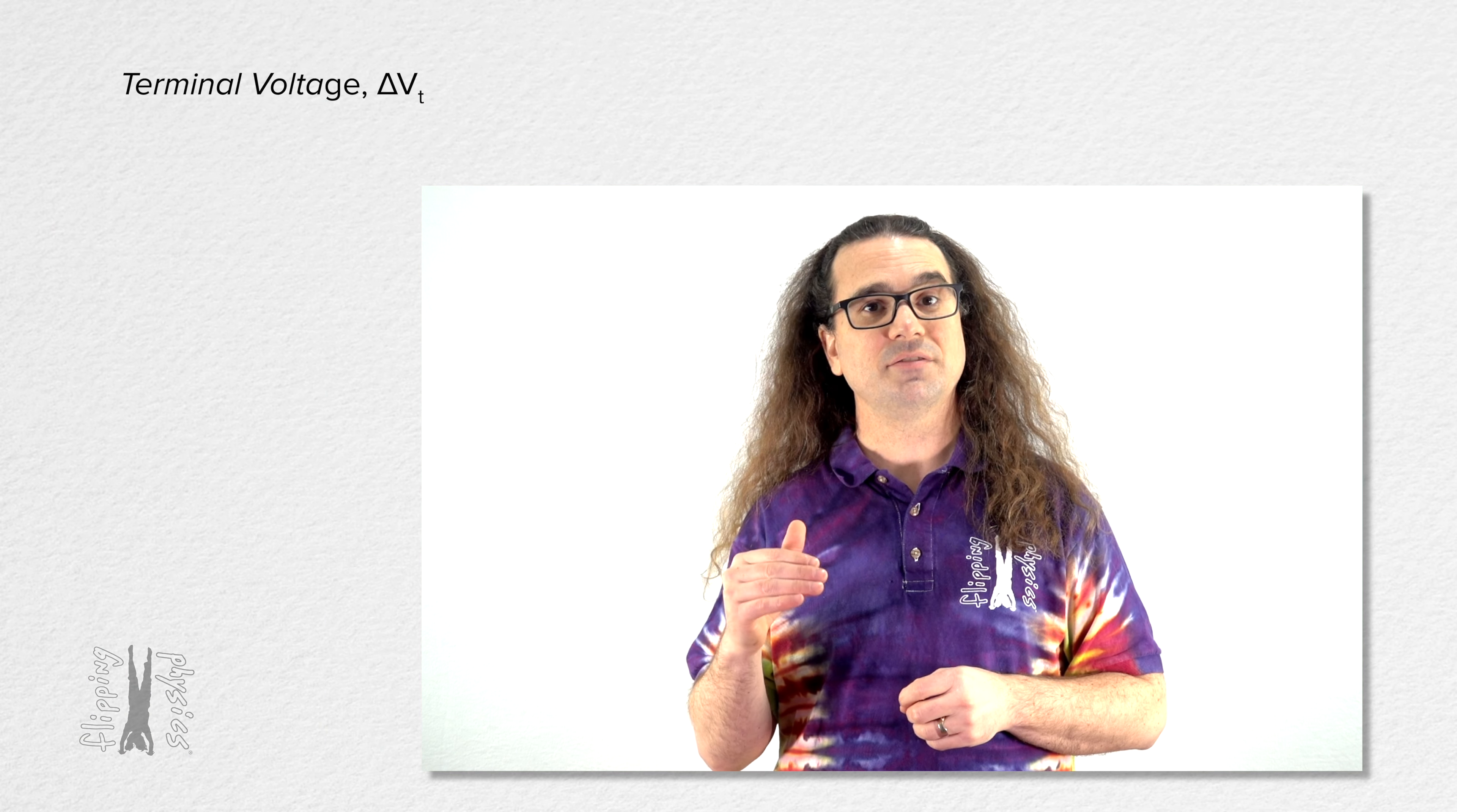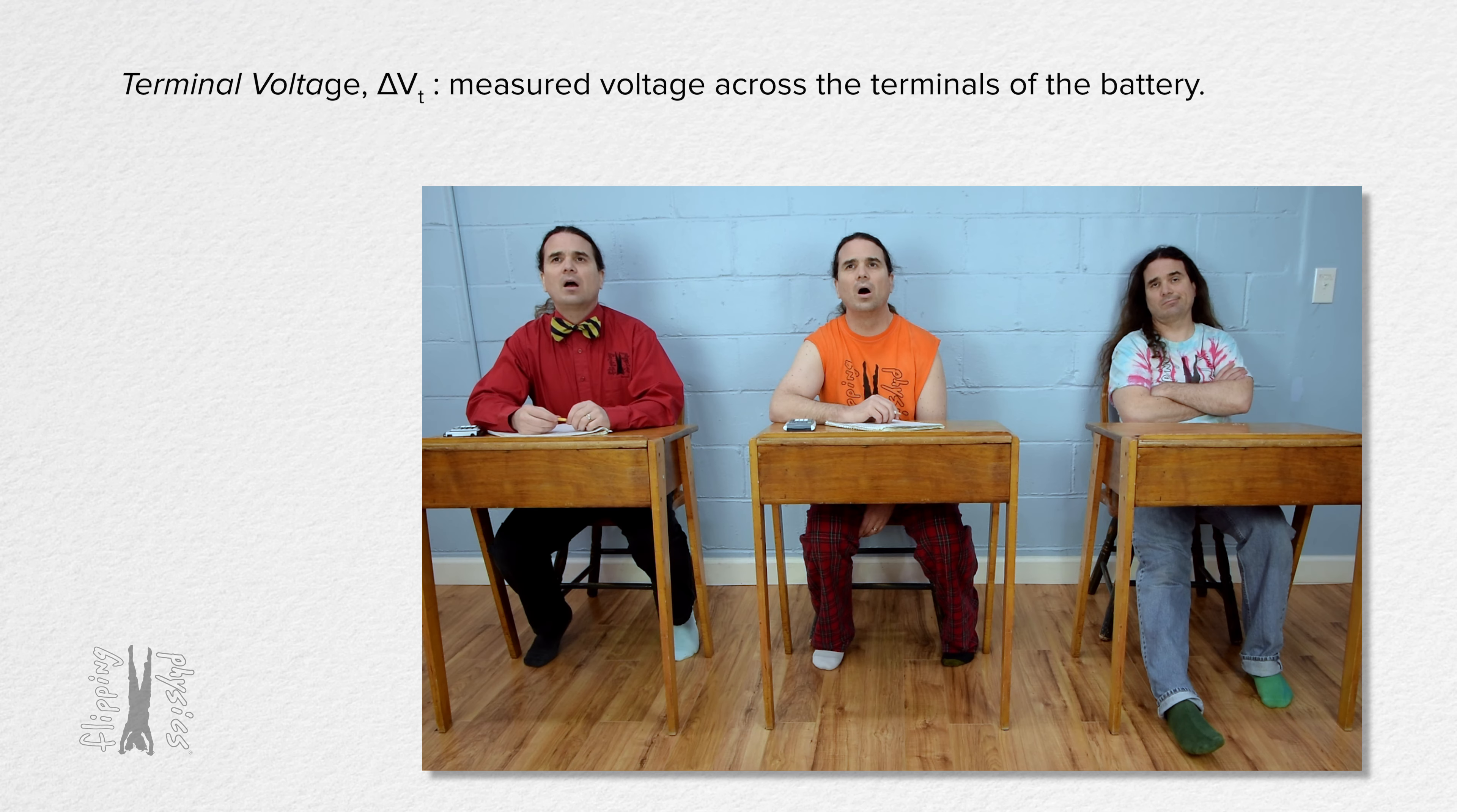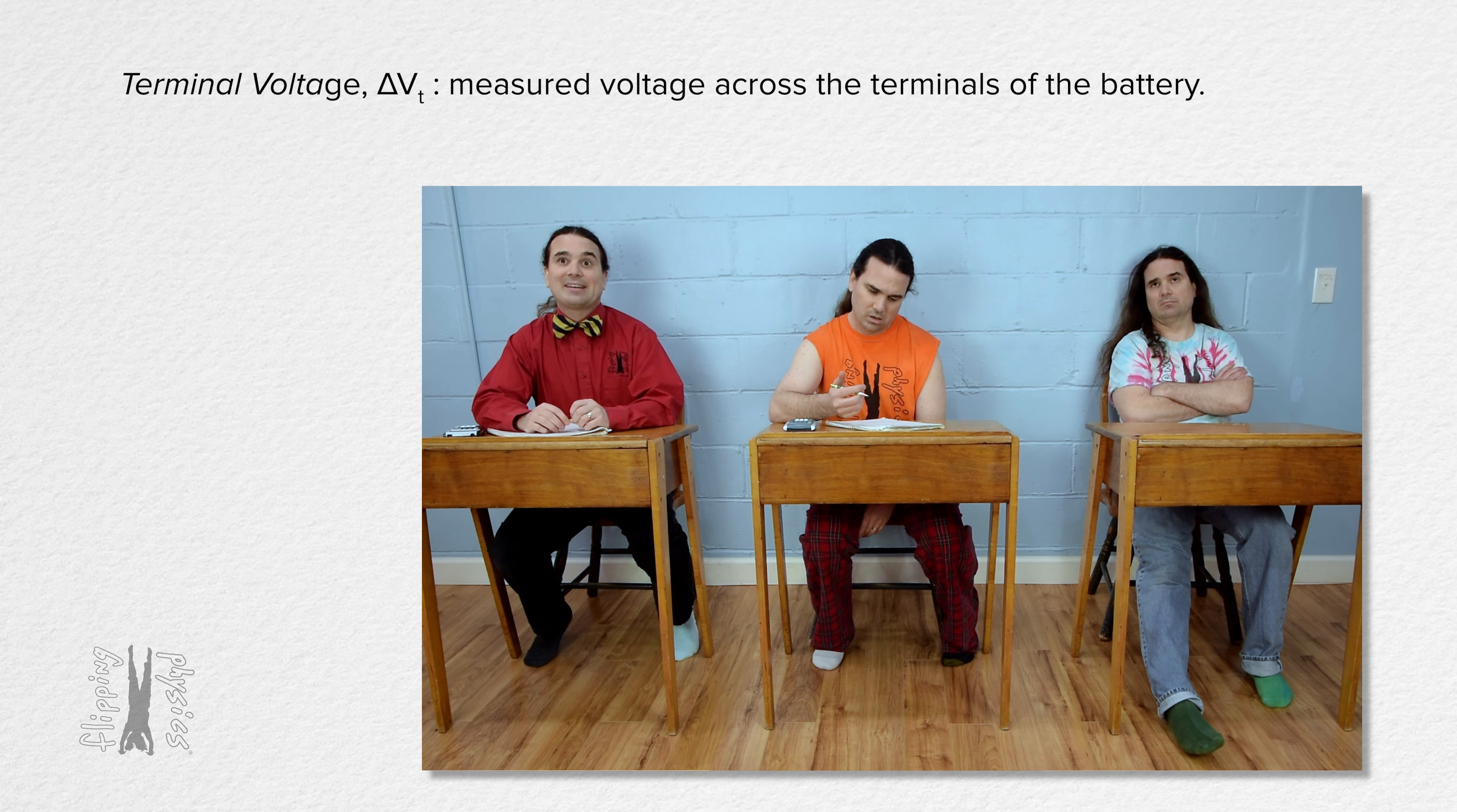Terminal voltage, delta v sub t, is the measured voltage across the terminals of the battery. Oh, oh, that is different from the electromotive force because EMF is the ideal electric potential difference across a battery. Correct Billy.